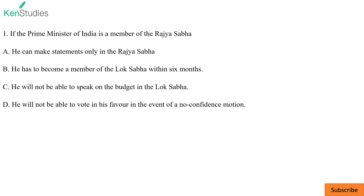For today's first question: if the Prime Minister of India is a member of Rajya Sabha — and this has happened before. Manmohan Singh was PM for a whole 10 years as a member of Rajya Sabha. Indra Gandhi was also a member of Rajya Sabha at one point, as was Indra Kumar Gujral. Any person can be Prime Minister even if not a member of either house, but must become a member within six months.